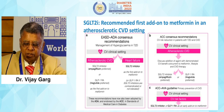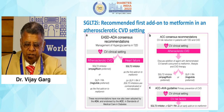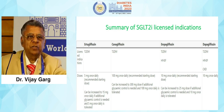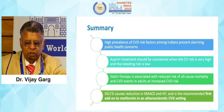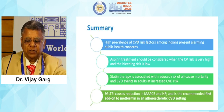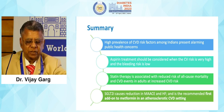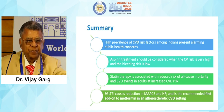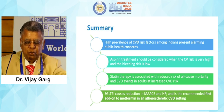The ACC guideline for primary prevention of cardiovascular effects states SGLT2 inhibitors should be given irrespective of diabetes status. Summary of SGLT2 licensed indications covers agents including dapagliflozin, canagliflozin, empagliflozin, and ertugliflozin. In summary: high prevalence of CVD risk among Indians presents an alarming public health concern. Aspirin treatment should be considered when CV risk is very high and bleeding risk is low. Statin therapy is associated with reduced risk of all-cause mortality and CVD events in adults with increased CVD risk. SGLT2 inhibitors cause reduction in MACE and heart failure, and are recommended as first add-on to metformin in atherosclerotic CVD settings.